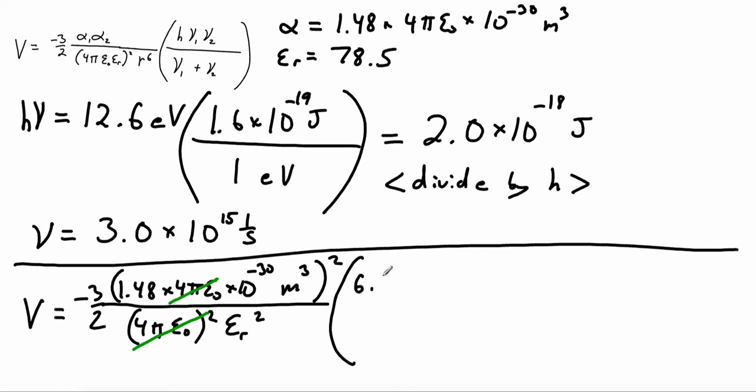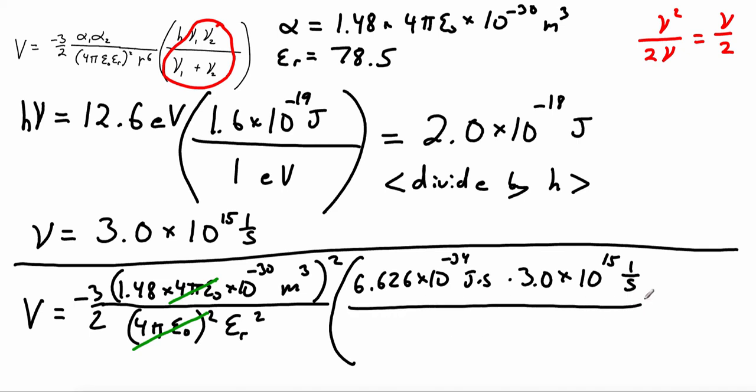And then we plug in our numerical factor for all the oscillator strengths. So we have 6.626, that's 10 to the negative 34 joule seconds. And before we do the oscillator strengths, we can see that since nu1 and nu2 are the same because we're talking about identical molecules here, we have nu squared over 2 nu, and that's just going to give us nu divided by 2. So let's just plug that in. So we have 3.0 times 10 to the 15th, 1 over seconds, all over 2.